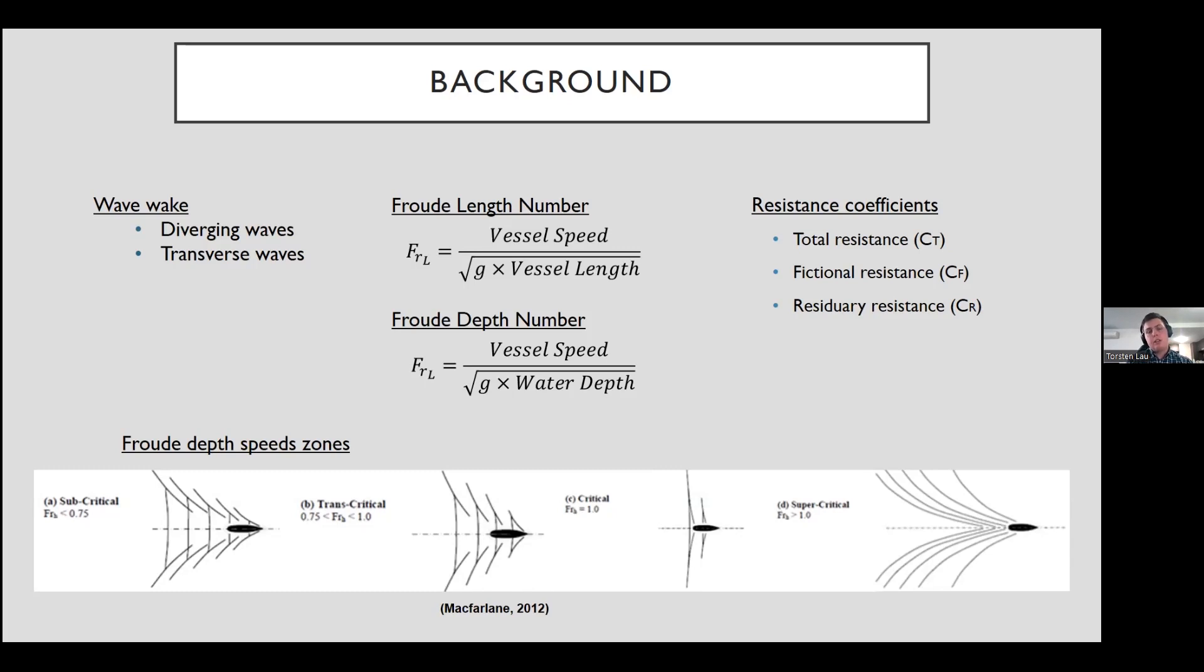I'll also just touch on briefly the resistance coefficients. We've got total resistance, which is CT, which is what is primarily recorded in model scale experiments. That can be made up of its components of frictional resistance and residuary resistance. Within the residuary resistance, the main component that we're interested in was the wave making, which makes up the primary amount of that resistance.